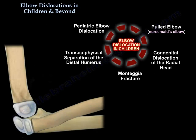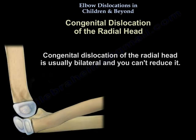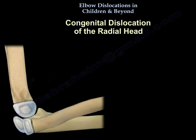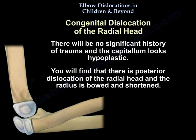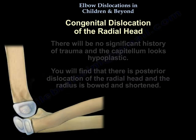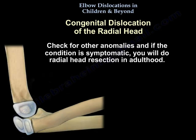Another entity that can be confused with elbow dislocation is congenital dislocation of the radial head, which is usually bilateral and cannot be reduced. There will be no significant history of trauma, and the capitellum looks hypoplastic. There is posterior dislocation of the radial head, and the radius is bowed and shortened. Check for other anomalies; if the condition is symptomatic, radial head resection is performed in adulthood.